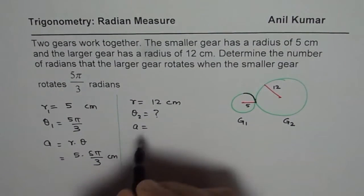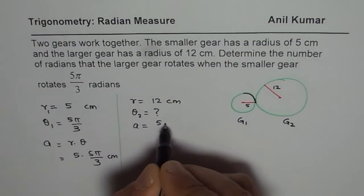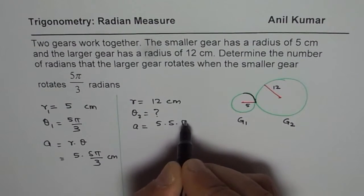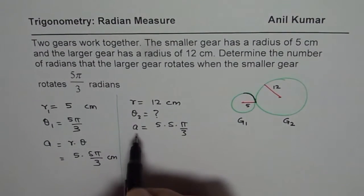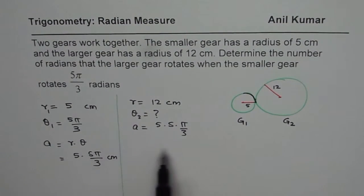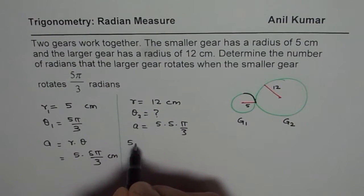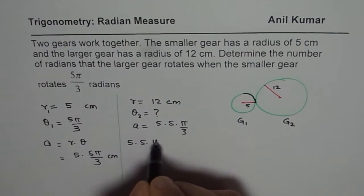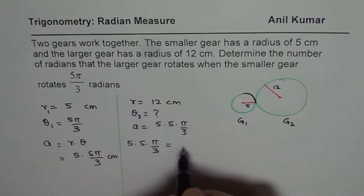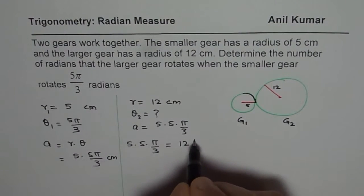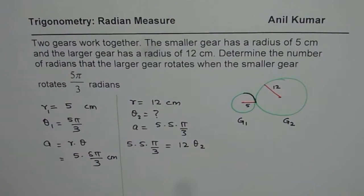But we know arc length, which is 5 times 5 times π/3. So what is this arc length? We know A is rθ. So we can write this as 5 times 5 times π/3 equals 12 times θ₂. So that is how we can get arc equals r theta.